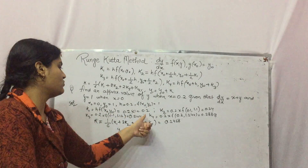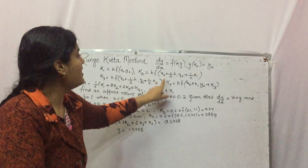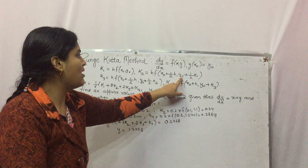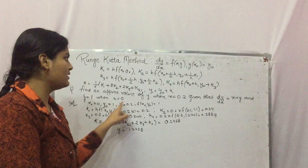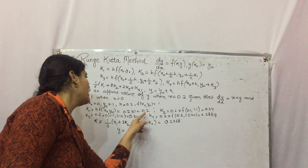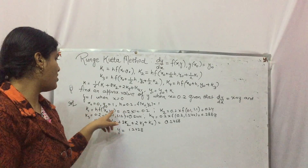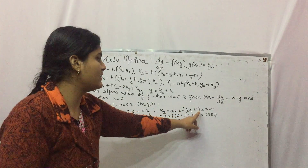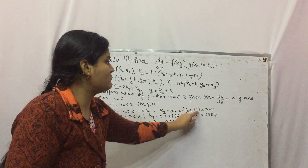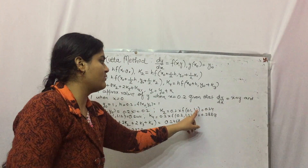K2 = H · F(x₀ + H/2, y₀ + K1/2). H is 0.2, so H/2 = 0.1, and x₀ + 0.1 = 0.1. y₀ is 1, K1 is 0.2, so K1/2 = 0.1, giving y₀ + K1/2 = 1.1. Since F(x, y) = x + y, we get 0.1 + 1.1 = 1.2. Multiplying by 0.2 gives K2 = 0.24.